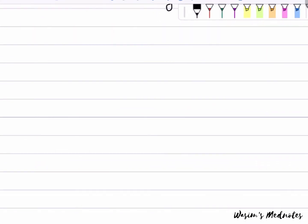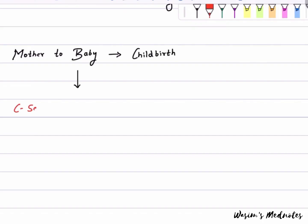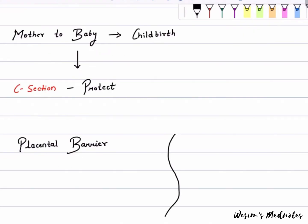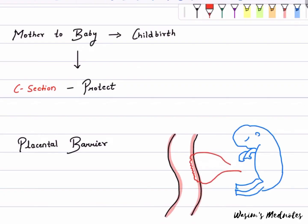The virus can also be passed from an infected mother to her baby during childbirth. A C-section can help protect against transmission. Rarely, during pregnancy, the virus can pass through the placental barrier.